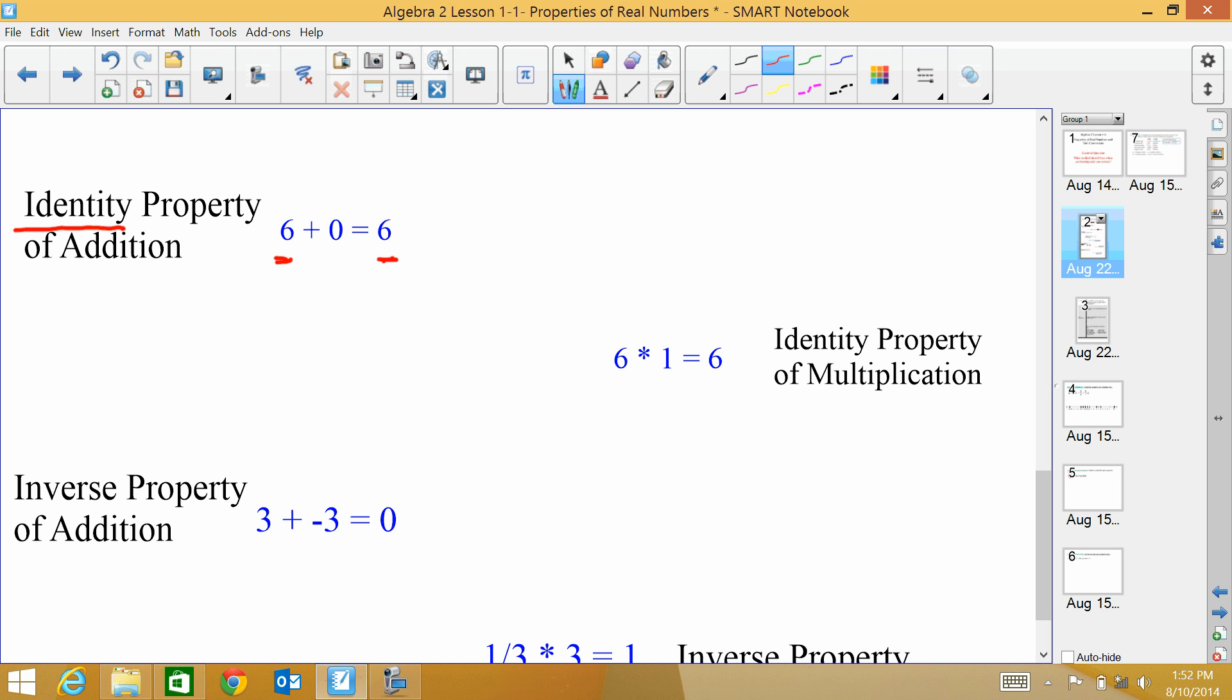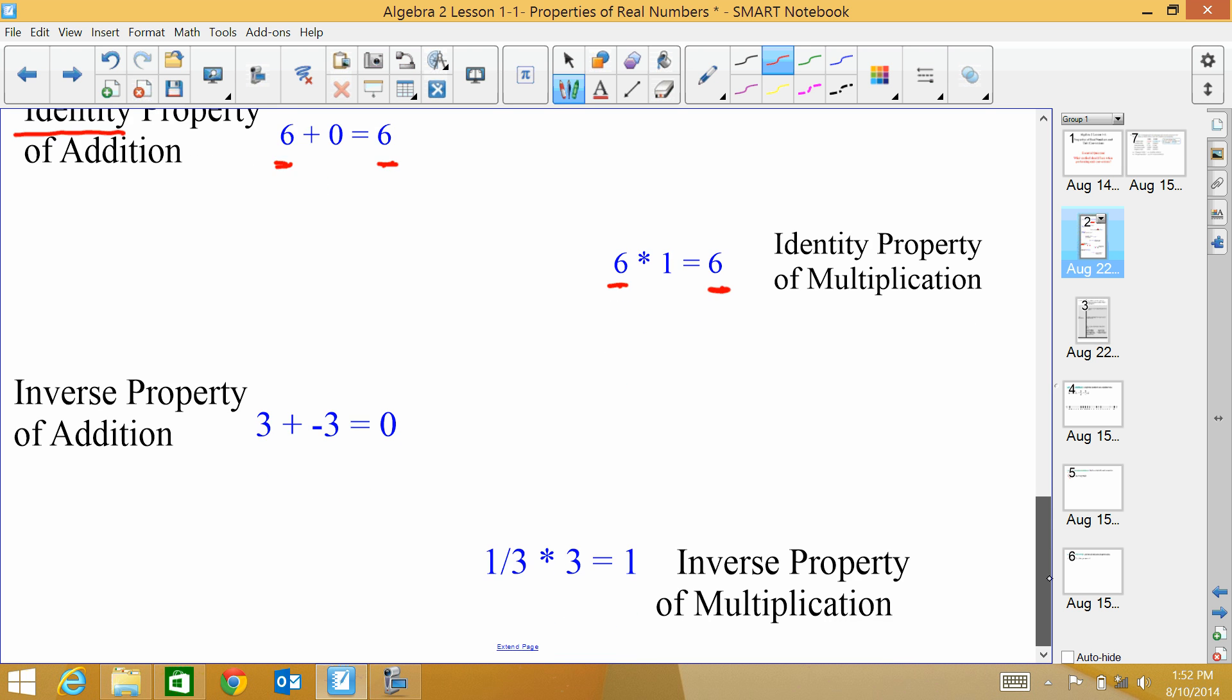Then we have identity property for multiplication. When you're multiplying a number and you want it to stay the same, then you multiply it by 1. So in this case, we started with 6. We ended with 6. But if we're multiplying, we have to multiply by 1 to keep the number the same.